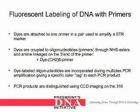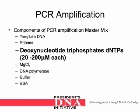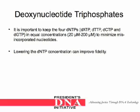The next component of the PCR amplification master mix are deoxynucleotide triphosphates, DNTPs, at a concentration of 20 to 200 micromolars each. It is important to keep the 4 DNTPs — dATP, dTTP, dCTP, and dGTP — in equal concentrations between 20 to 200 micromolars, to minimize misincorporated nucleotides. Lowering the DNTP concentration can improve fidelity of the incorporation process.